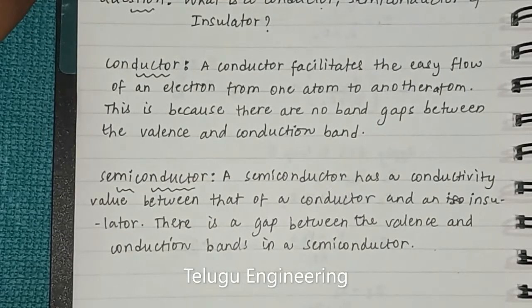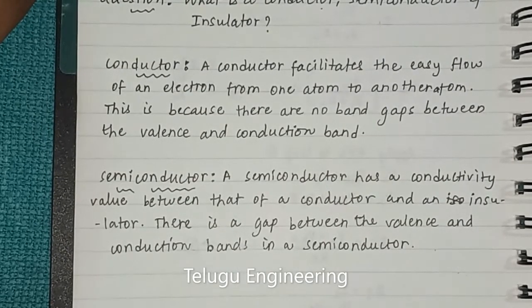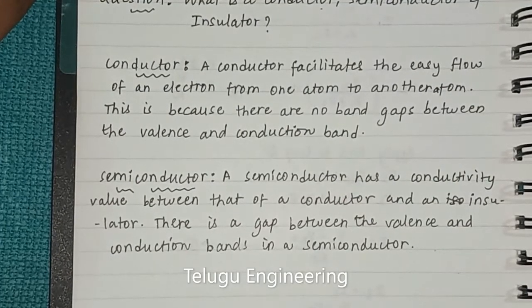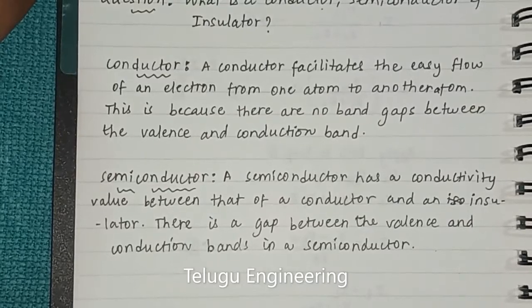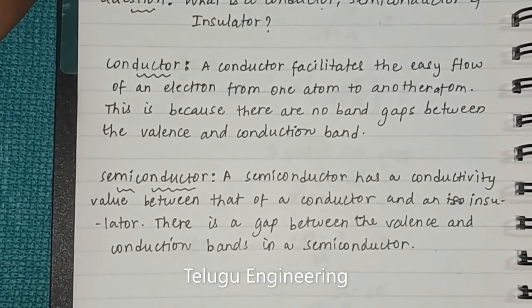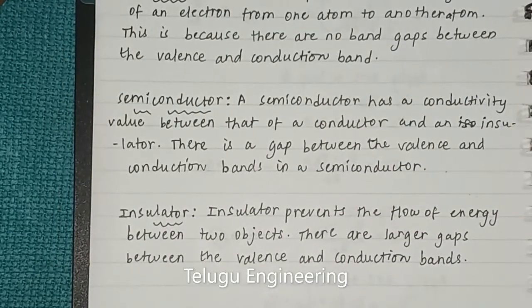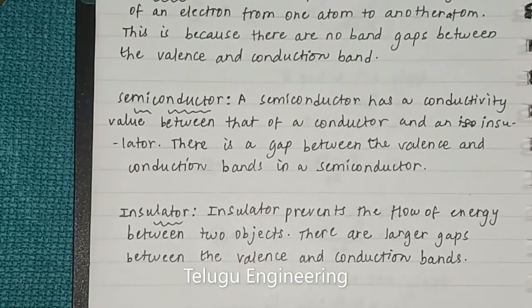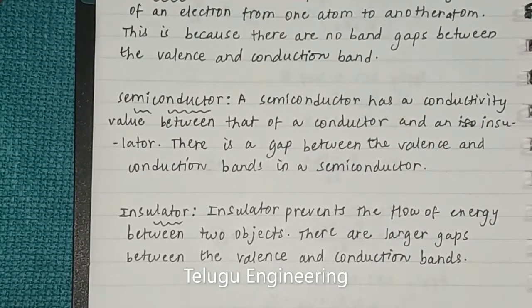Moving on to the definition of an insulator: An insulator prevents the flow of energy between two objects. For example, insulators may prevent the flow of electric, heat, or sound. A substance that does not conduct electricity is called a dielectric material.